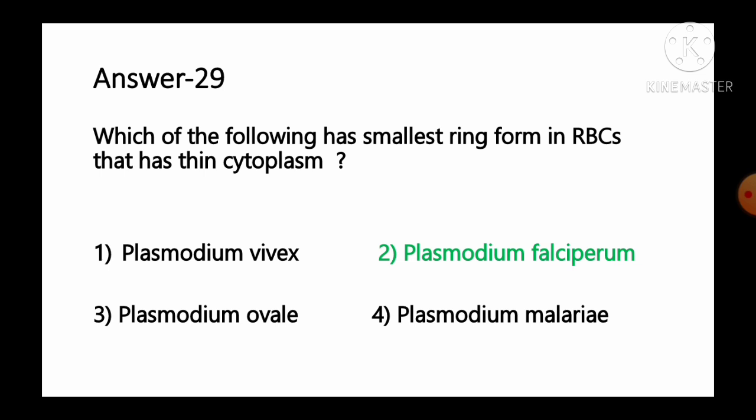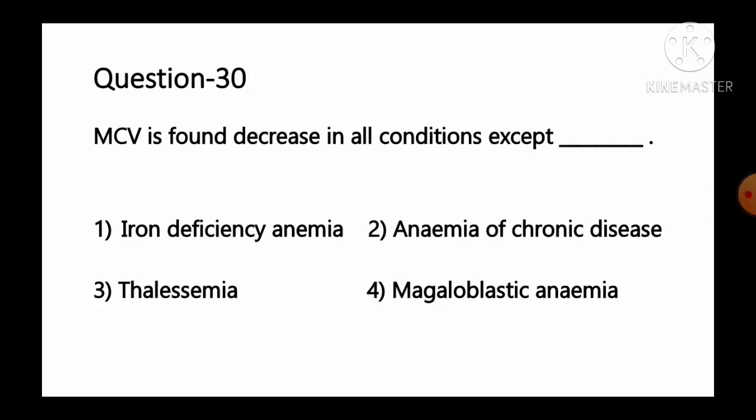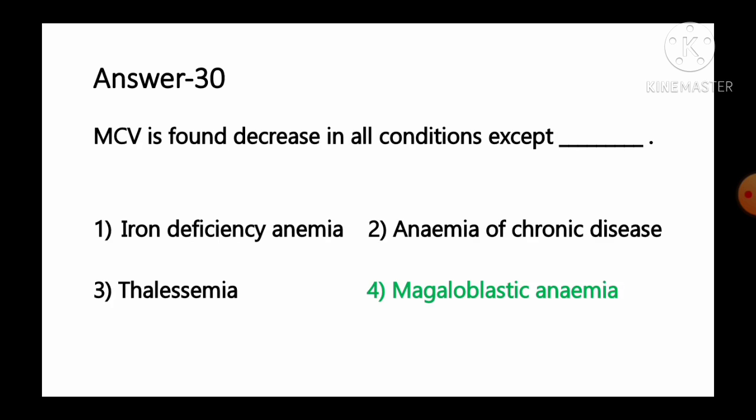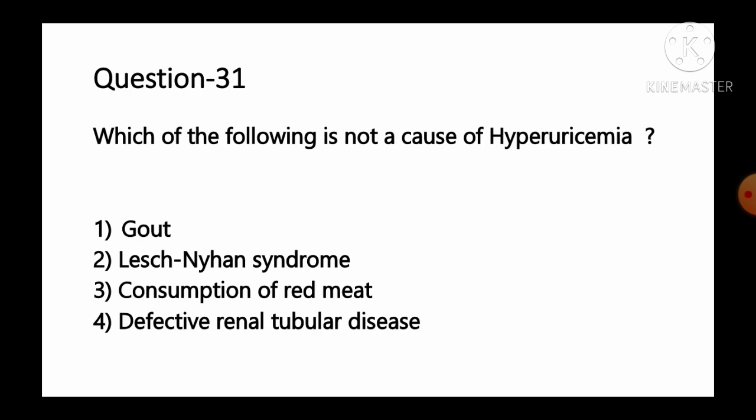Question number 30: MCV is found decreased in all conditions except — option 1 iron deficiency anemia, option 2 anemia of chronic disease, option 3 thalassemia, option 4 megaloblastic anemia. Megaloblastic anemia causes macrocytic anemia with increased mean corpuscular volume (MCV), defined as more than 100 femtoliters, as a hallmark. In iron deficiency anemia, anemia of chronic disease, and thalassemia, MCV is generally decreased. So option number 4, megaloblastic anemia, is the correct answer.